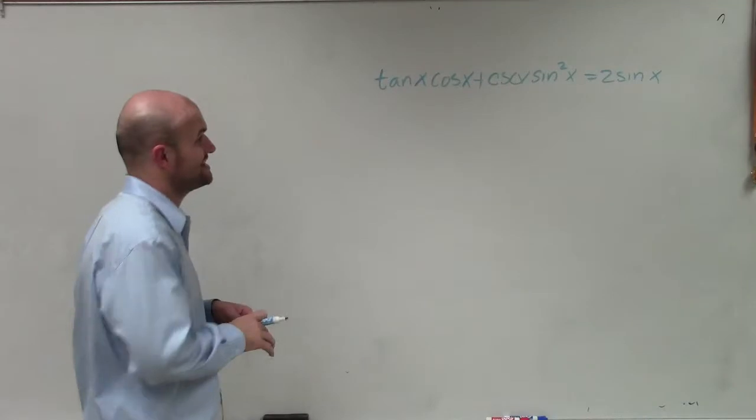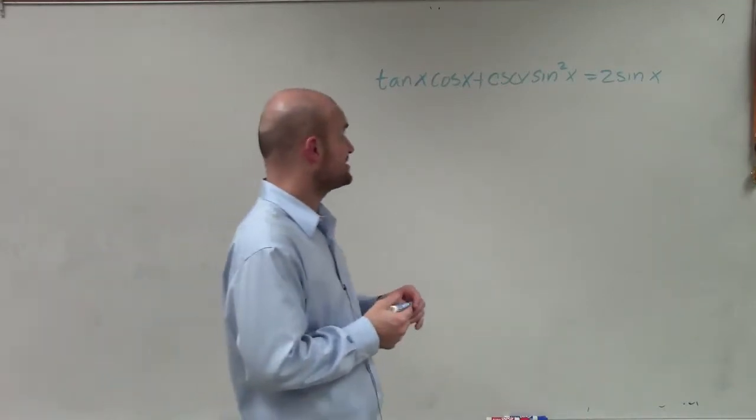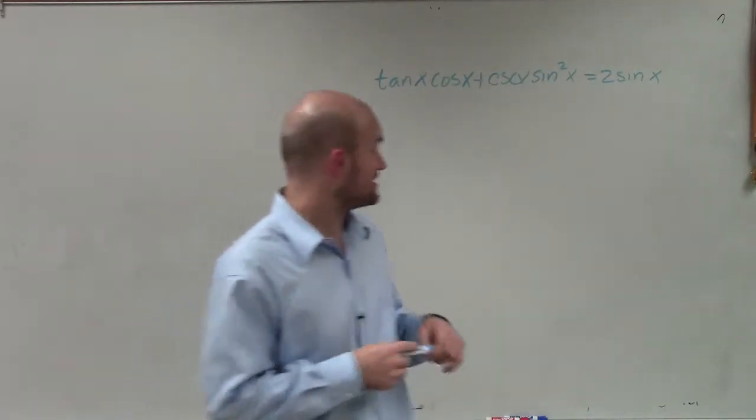Welcome. All right, so in this case, what I have is tangent of x times cosine of x plus cosecant of x times sine squared of x equals 2 sine of x.